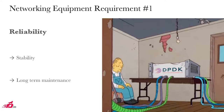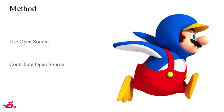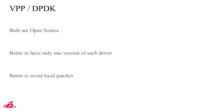How do you achieve this reliability? You can go to the open source method — use some open source projects and obviously contribute to those projects in order to have them in good shape for your project. Let's be a bit more precise: we're talking about VPP and DPDK.